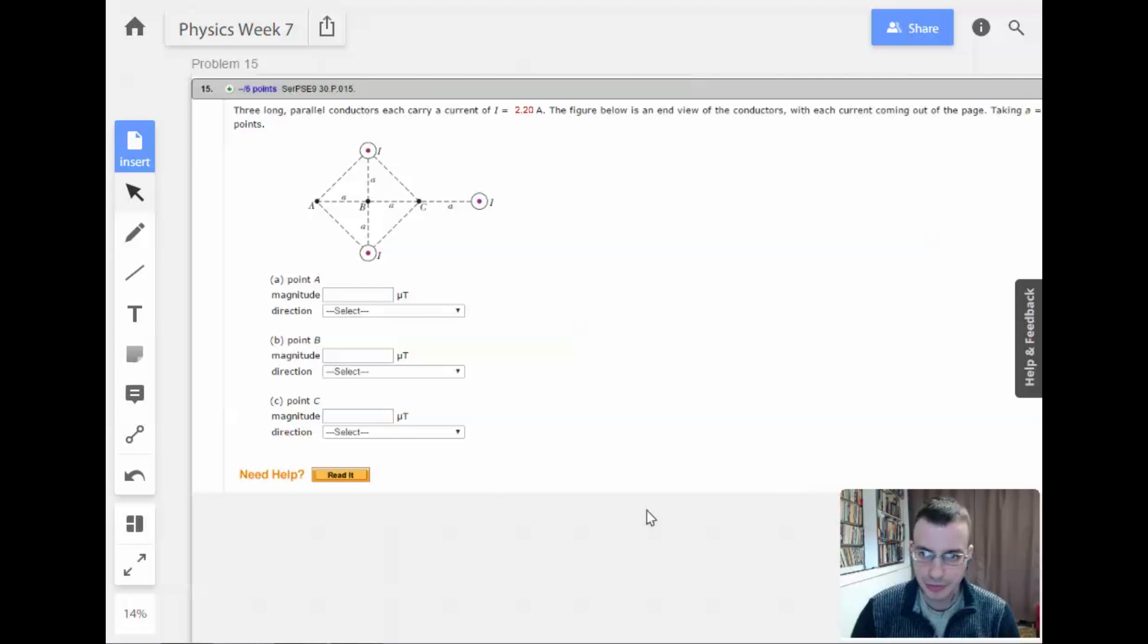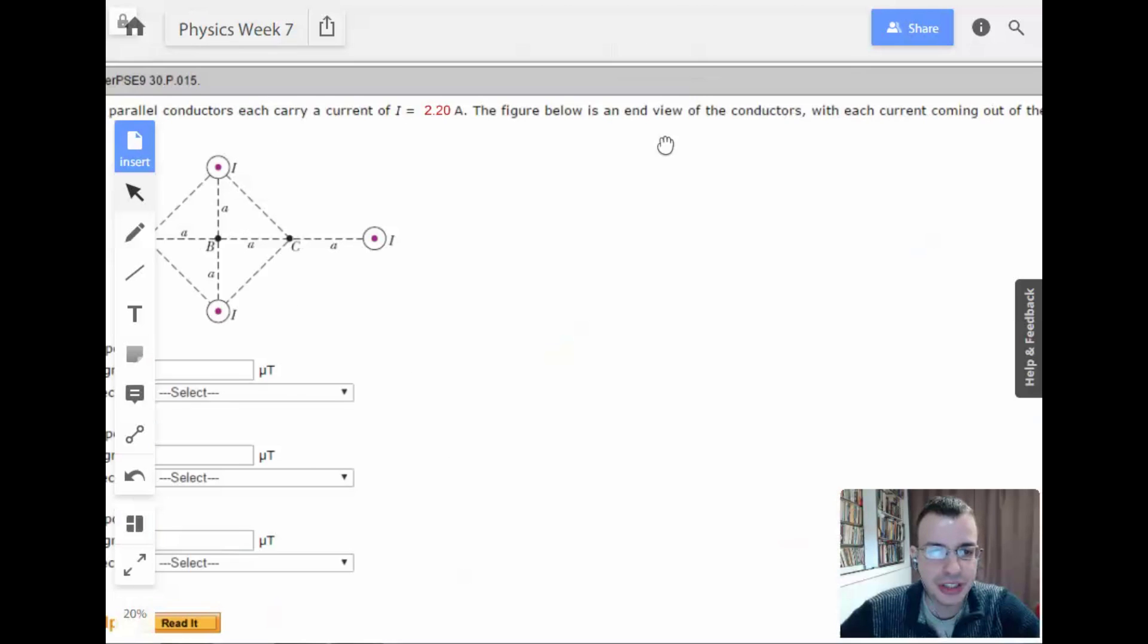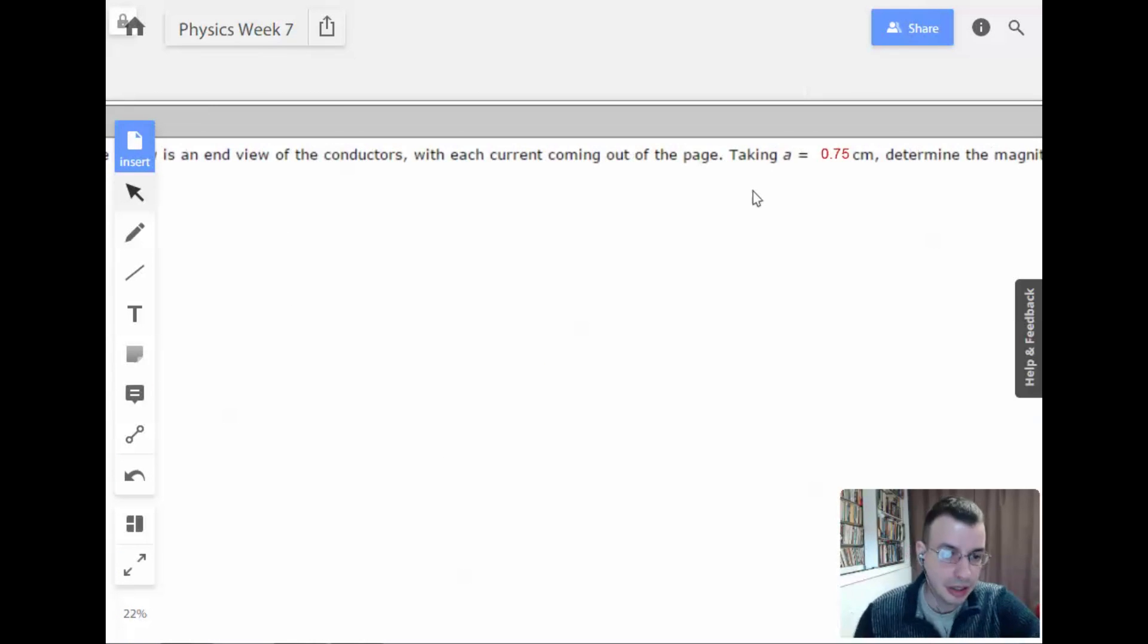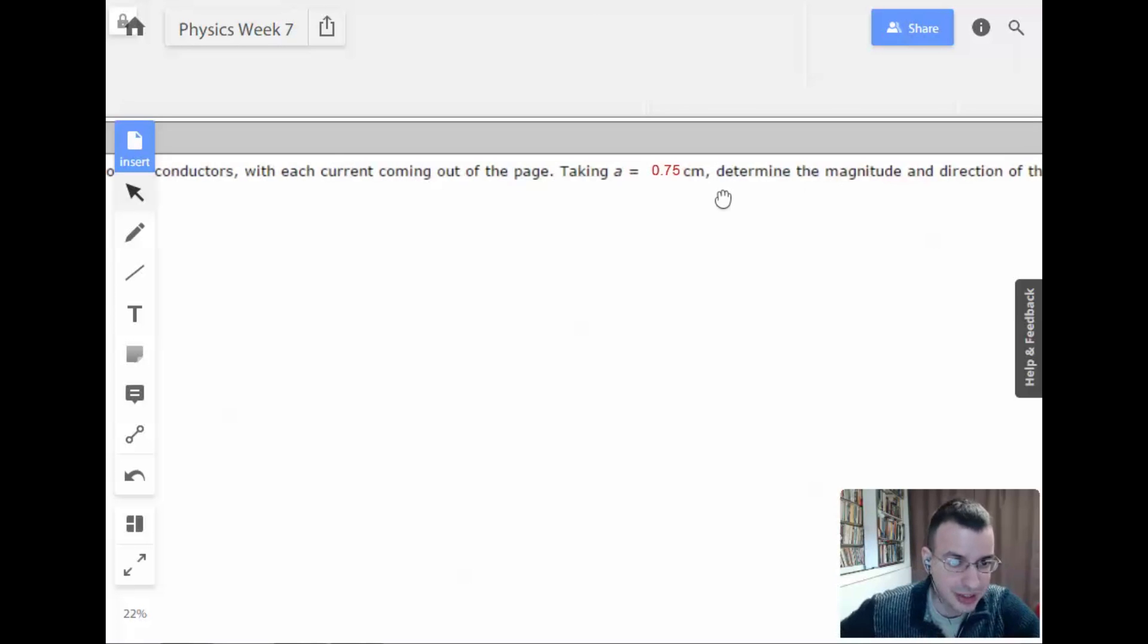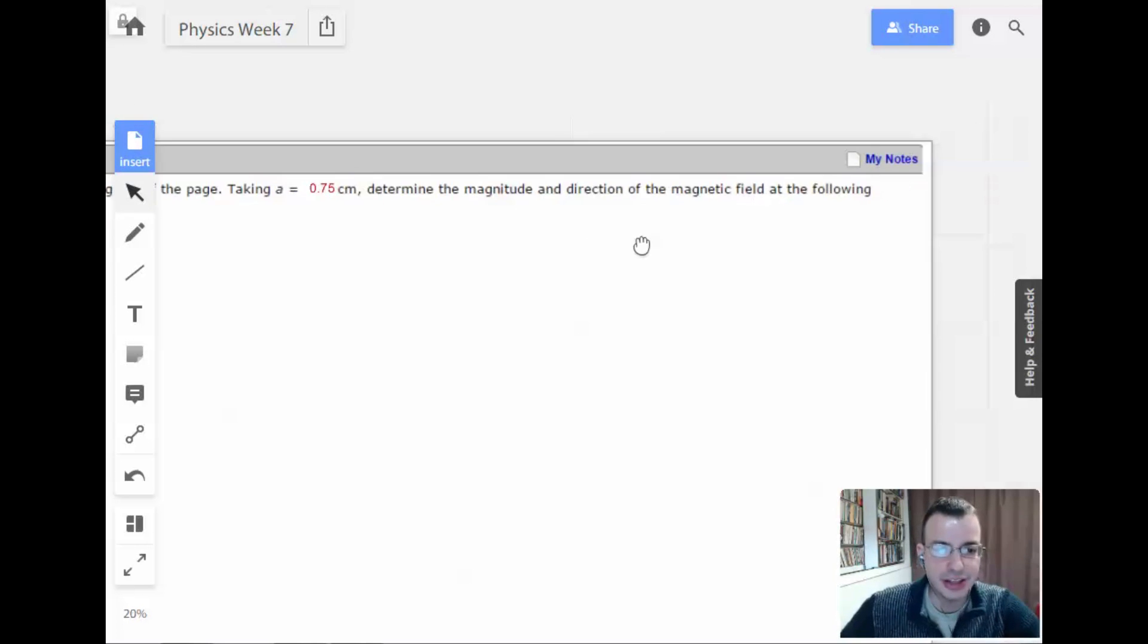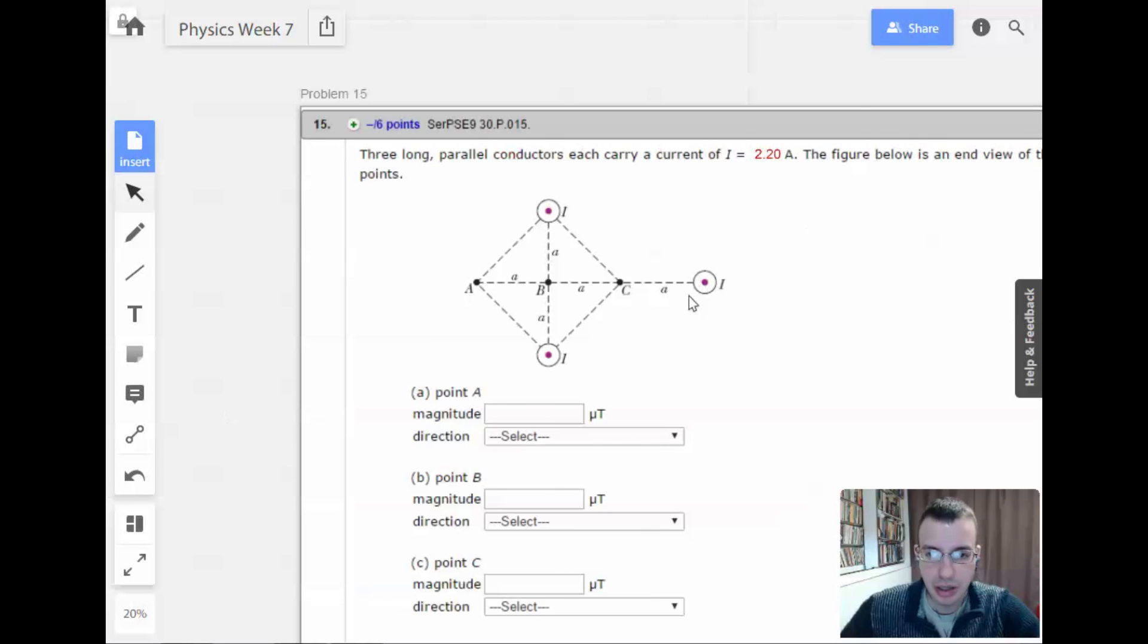Week 7, problem 15. Three long parallel conductors each carry a current of 2.2 amps. The figure below is an end view of the conductors, with each current coming out of the page. Taking A equals 0.75 centimeters, determine the magnitude and direction of the magnetic field at the following points.